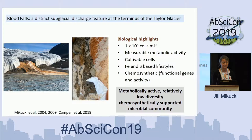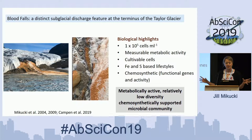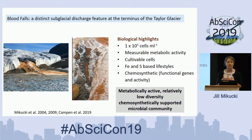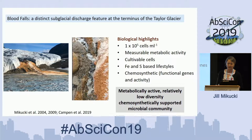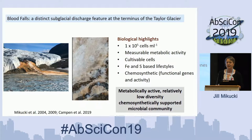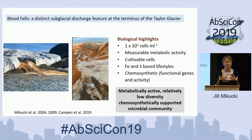There's also biology in this brine. When you collect this active discharge, it contains detectable cells — about 10^5 cells per mL — that's about two orders of magnitude higher than the surrounding glacial ice. There's measurable metabolic activity: you can feed labeled substrates to this water and over time it'll be incorporated into cellular biomass. You can cultivate some members of this community in the lab and they're represented in amplicon libraries, seeming to have lifestyles related to organisms with iron and sulfur metabolisms. There are also multiple lines of evidence that the system is chemosynthetic — uptake of bicarbonate is sufficient to provide fixed carbon to the heterotrophic community.